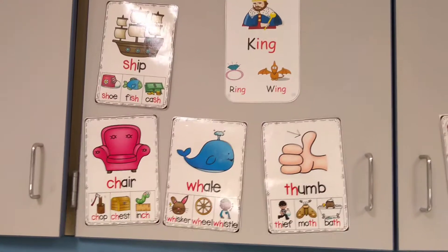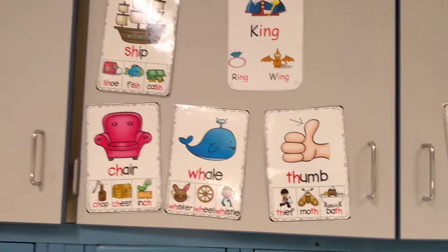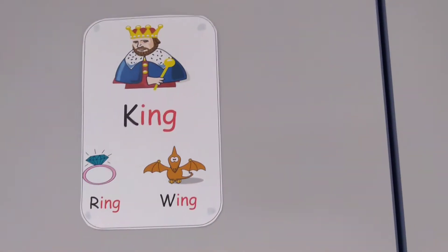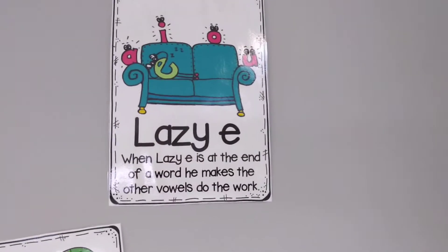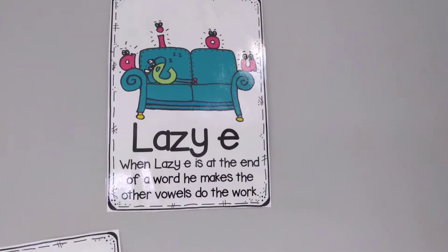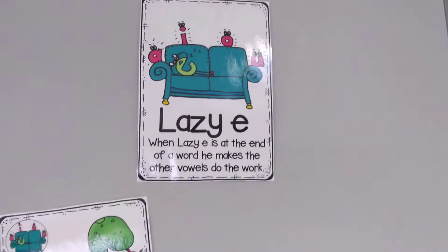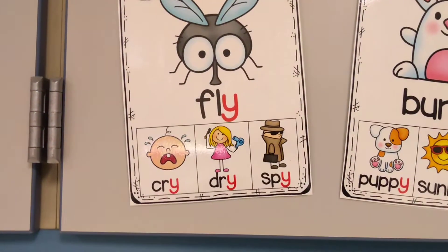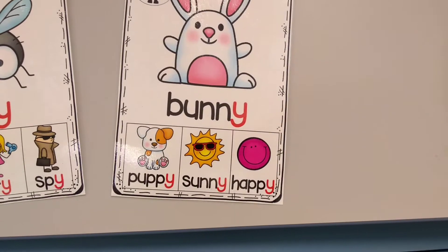We have our H brothers: SH, CH, WH, TH. And ING says 'ing.' Lazy E — magic E makes the vowel say its name, but it can only jump over one letter. Tricky Y the robber guy steals the sounds of E and I. If it's a short word, it's gonna say I. If it's a long word, it's gonna say E.